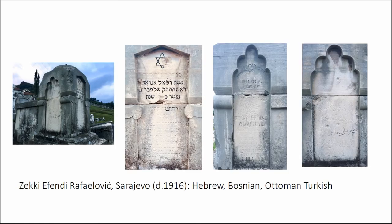As a kind of final statement, I want to give you an example of a tombstone erected in the early 20th century for an eminent Jewish thinker. His tombstone contains three inscriptions — in Hebrew, in Bosnian, and in Ottoman Turkish. Some argue this is the only Jewish tombstone in the world with an Ottoman Turkish inscription. What is actually interesting is that the three inscriptions say completely three different things.